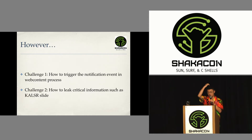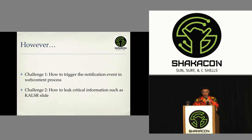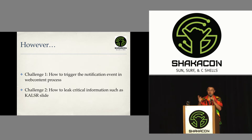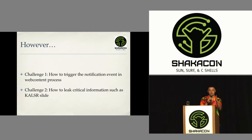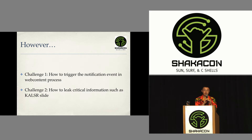The first challenge is: how can we trigger the notification event inside the web content process? The second challenge is: how can we make the leaked data meaningful? For example, we want to bypass kernel address layout randomization — the KASLR slide value. Every time you boot macOS, the kernel is loaded at different locations. There is a slide value. If we can leak that value, we can totally bypass the randomization protection.